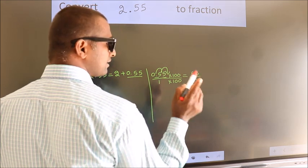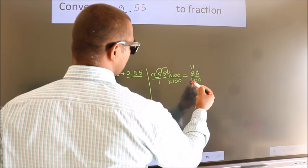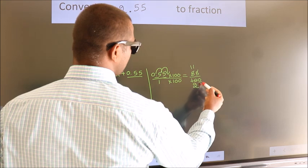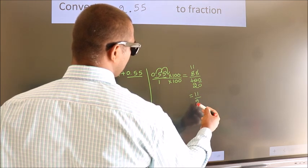Now I cancel with 5. 5 ones, 5 ones, 5 twos. This 0 as it is down. So the fraction we got is 11 by 20.